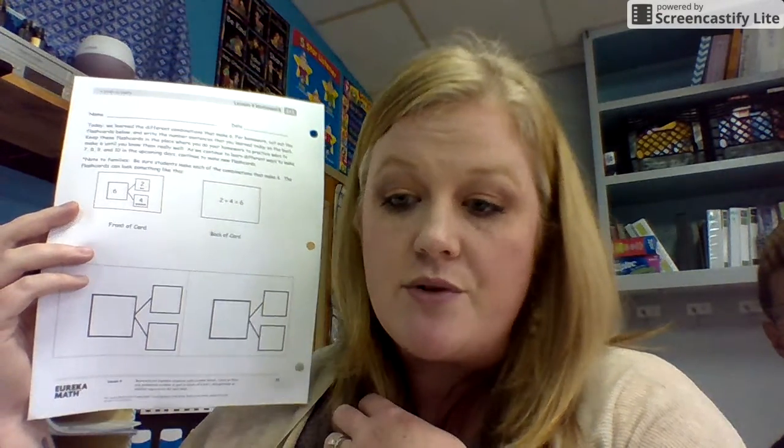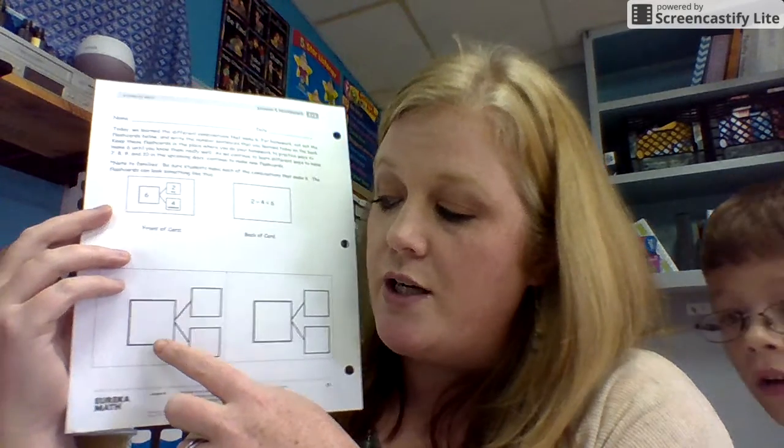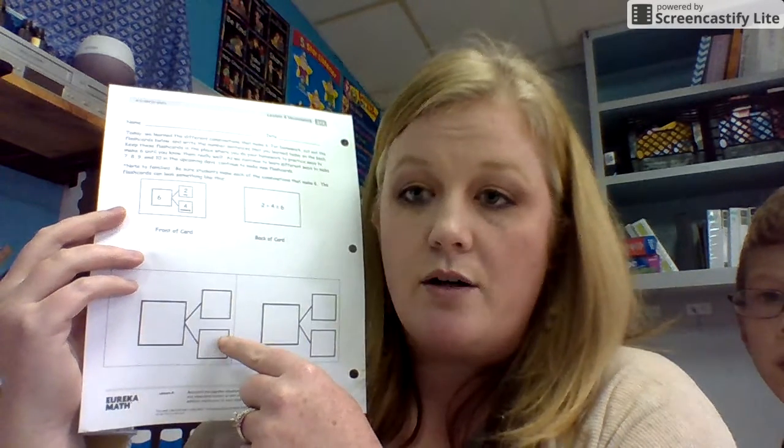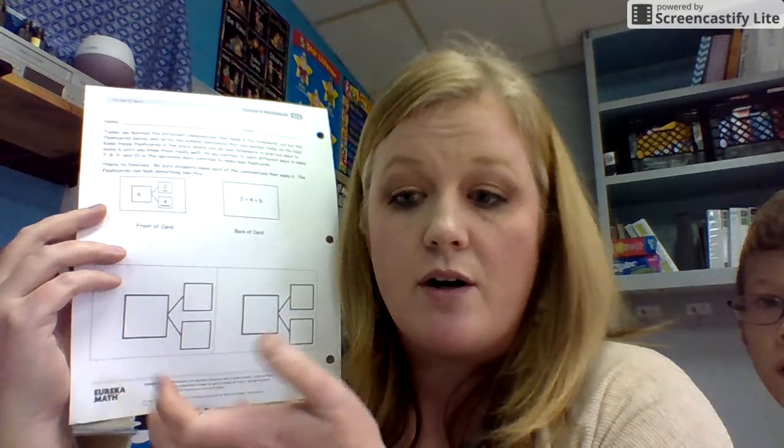And then on the back, they would write the number sentence three plus three. Another way to do it would be six is the whole and two and four. So the number sentence on the back would be two plus four equals six.